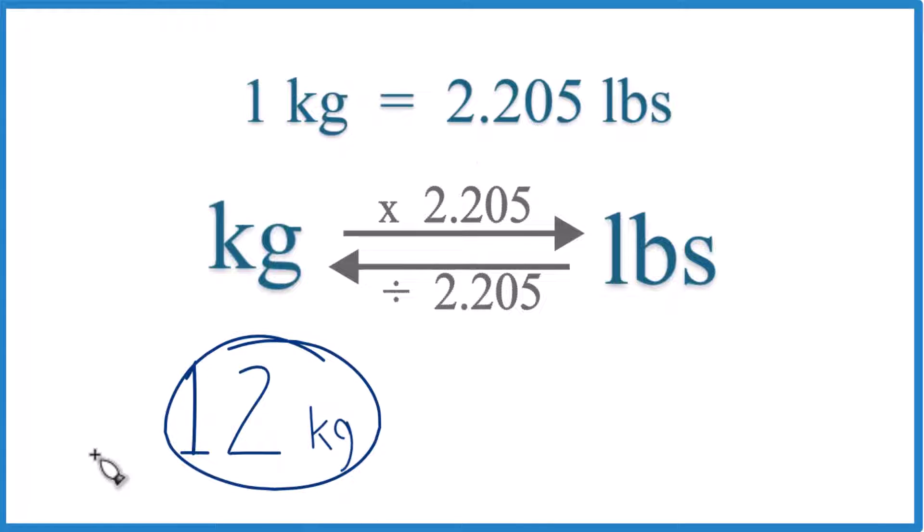Let's convert 12 kilograms to pounds. What you need to know first is that 1 kilogram equals 2.205 pounds. This is what we call a conversion factor. We need it when we're going from kilograms to pounds or pounds to kilograms.